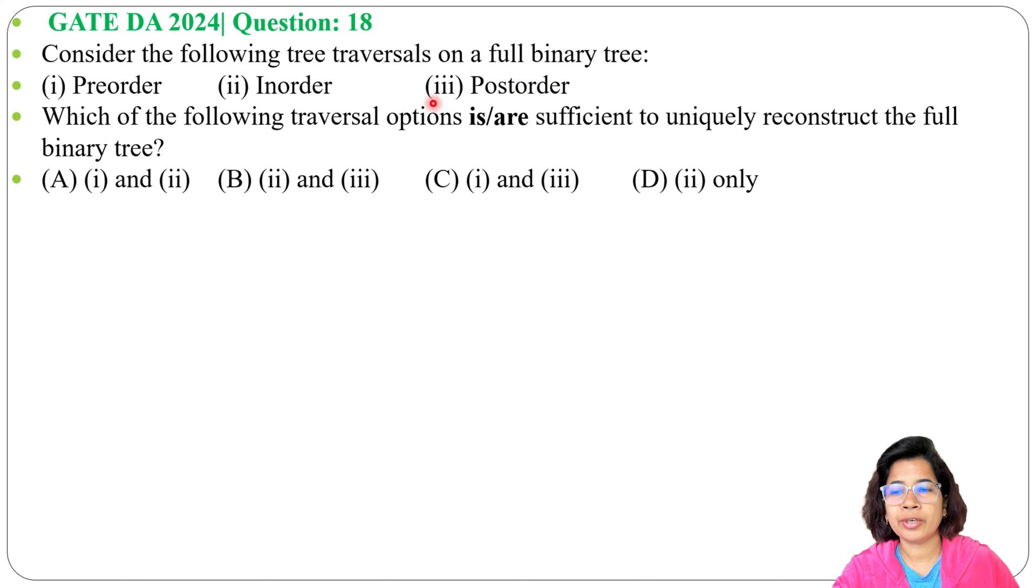in-order, and post-order. Which of the following traversal options is or are sufficient to uniquely reconstruct the full binary tree? And four options are given.